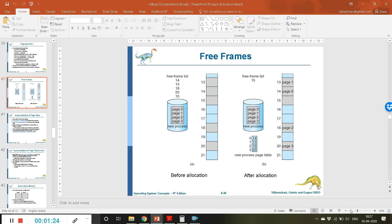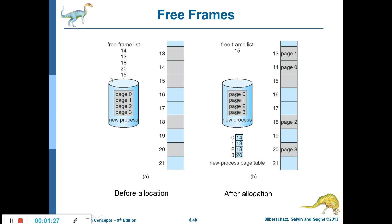A new process is divided into four pages — page 0 to page 3. Currently there are five free frames. There are four pages and five free frames. The frames displayed in gray color are free, and the frames displayed in bluish color are already occupied by some other information or other pages.